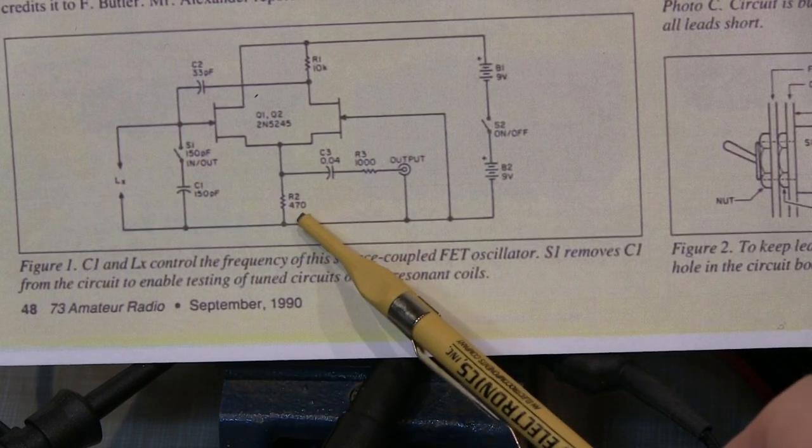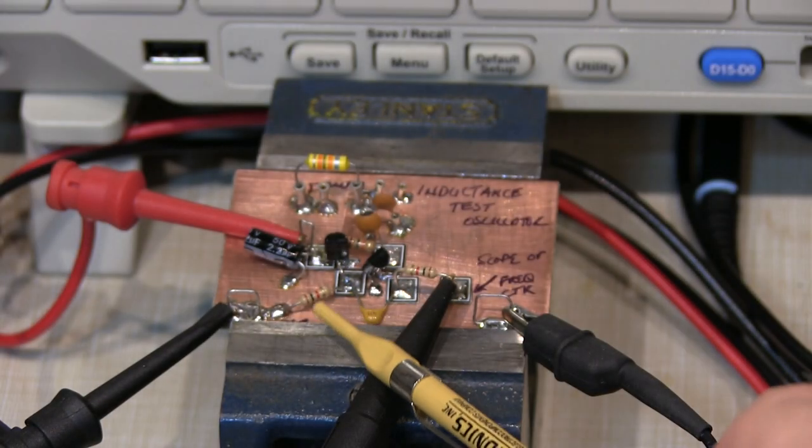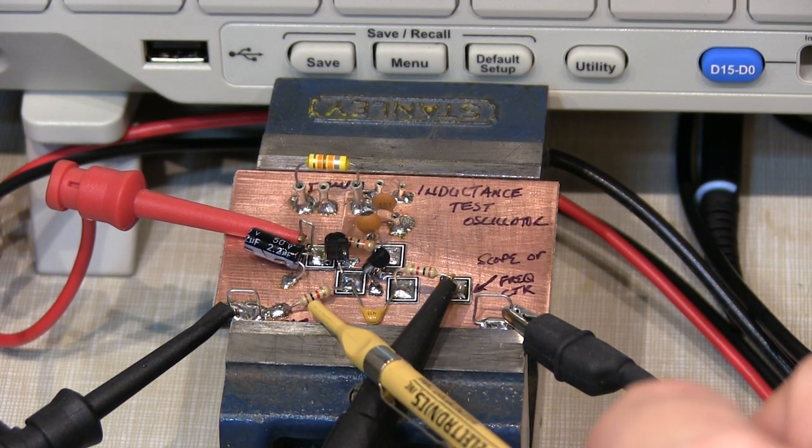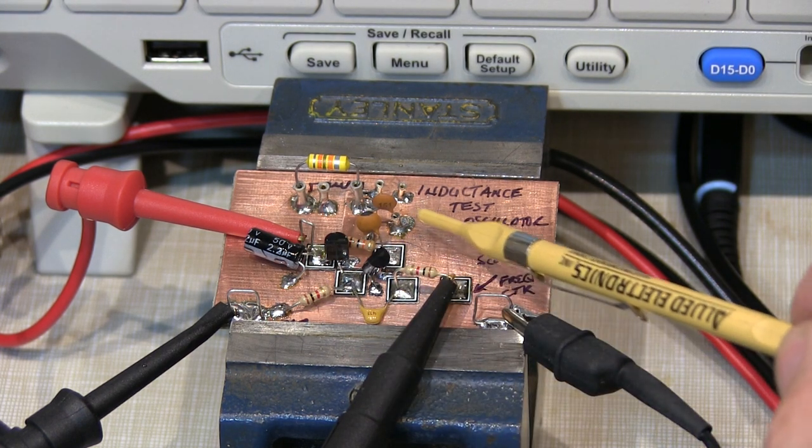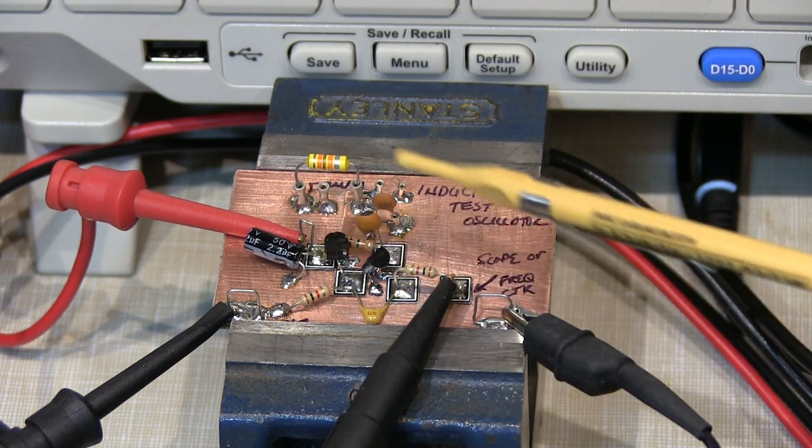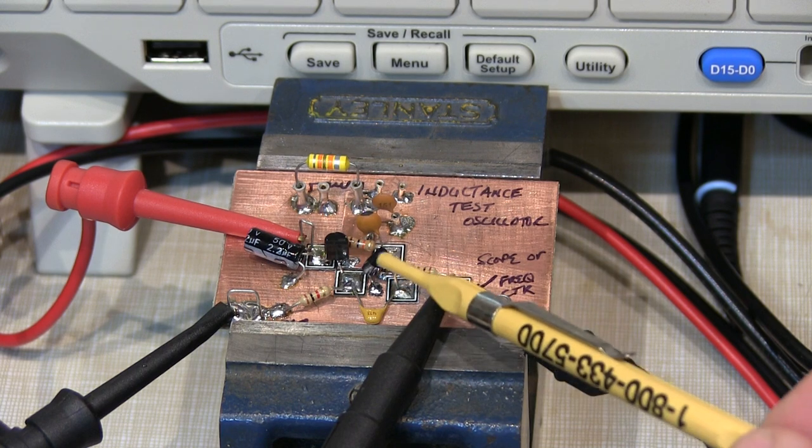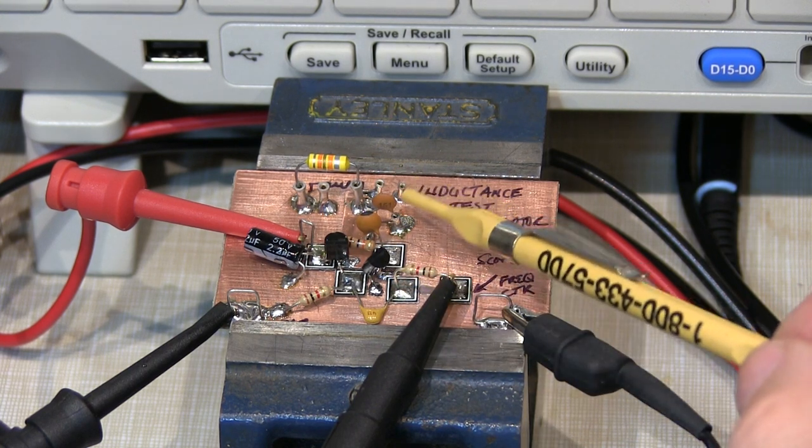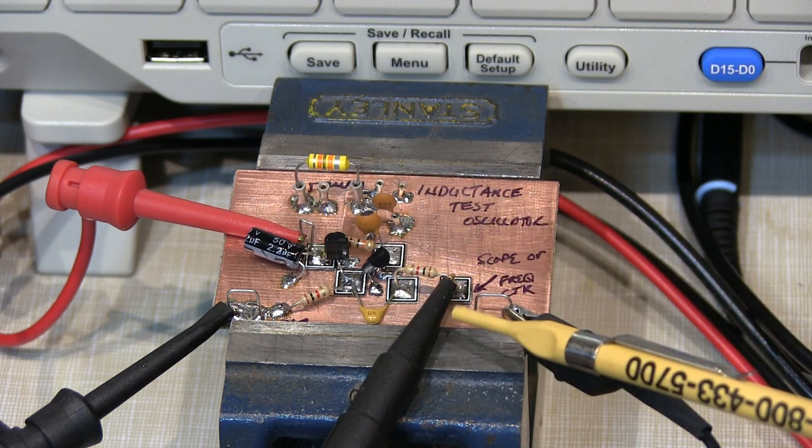So I found that just by changing this 470 ohm resistor to a 1K ohm resistor in my implementation, that allowed the drain voltage of Q2 to raise up a little bit, get Q2 into the saturation region for the JFET, and everything worked just fine. I found that this circuit oscillates from about 9 volts power supply voltage up to 18 volts or more.